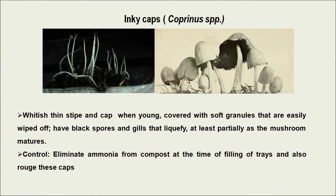One of the most common competitor molds is inky cap, which is a Coprinus species — mostly Coprinus fumatus. It is also known as an indicator mold because it shows the presence of ammonia in the compost. When compost is ready for spawning, there should be no ammonia smell. When inky caps appear, it indicates the compost was not properly prepared and some ammonia was left. To manage it, ammonia should be checked before spawning.